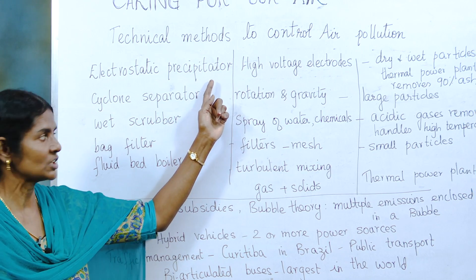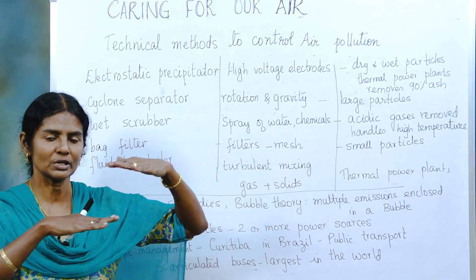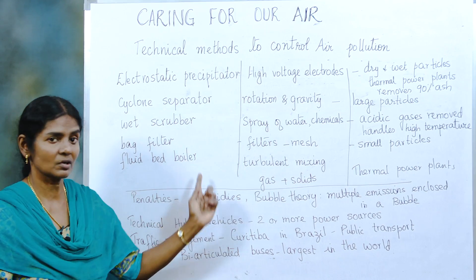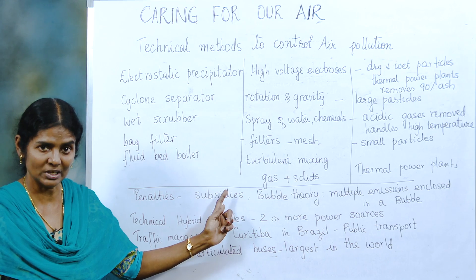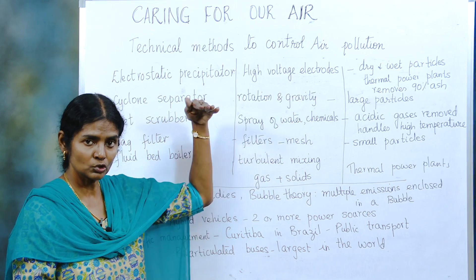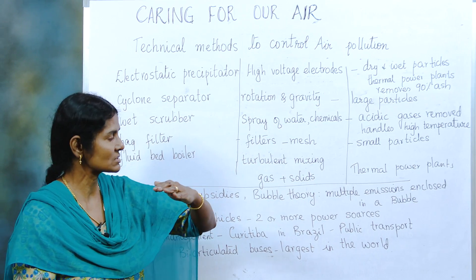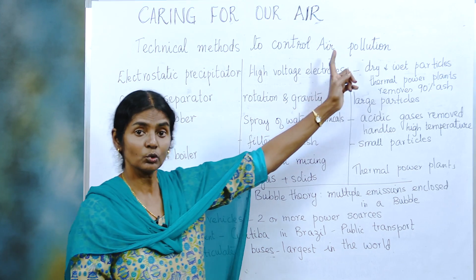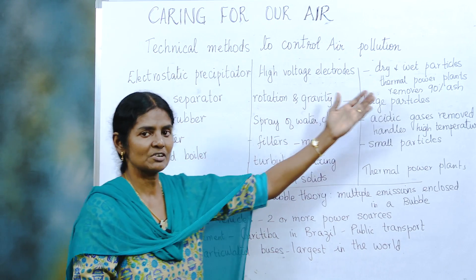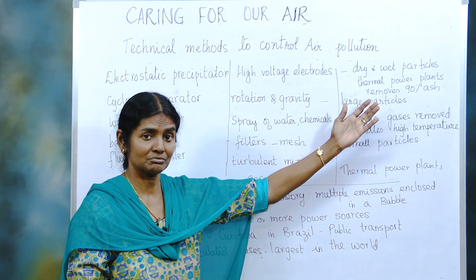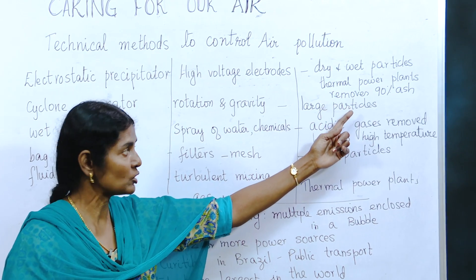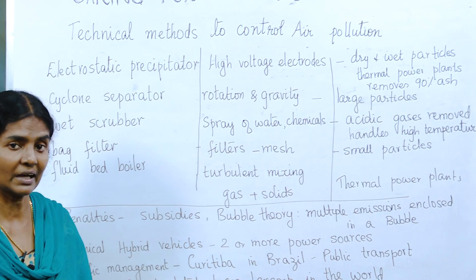The first one — electrostatic precipitator — uses high voltage electrodes through which contaminated gases and wastes come through. Both dry and wet particles are trapped and ionized, leaving only safe gases into the atmosphere. This is used in thermal power plants and removes 90% of the fly ash.